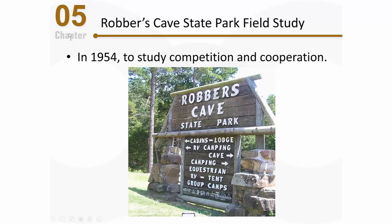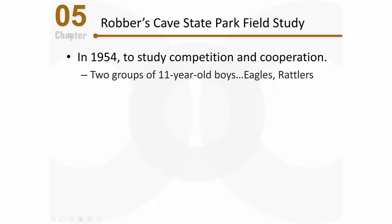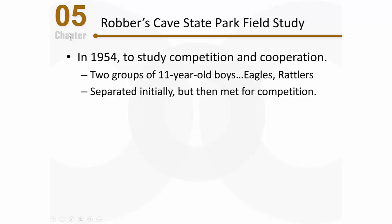The study was conducted in Robbers Cave State Park. They were trying to study the effects of situations in which kids need to compete and situations in which kids need to cooperate. The study involved two groups of 11-year-old boys. They named their groups the Eagles and the Rattlers. They were separated initially but later met for some competition.